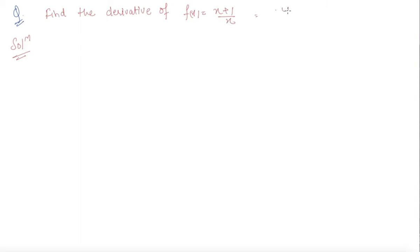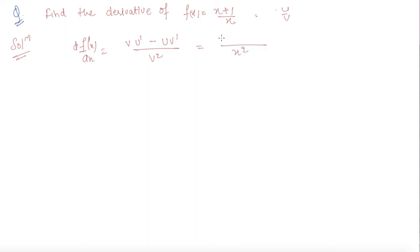This is a u/v form, so I apply the quotient rule: df(x)/dx = [v · u' − u · v'] / v². Here u = x + 1, so u' = 1, and v = x, so v' = 1. This gives [x · 1 − (x + 1) · 1] / x² = (x − x − 1) / x², which equals −1/x². So the differentiation of this function is −1/x².